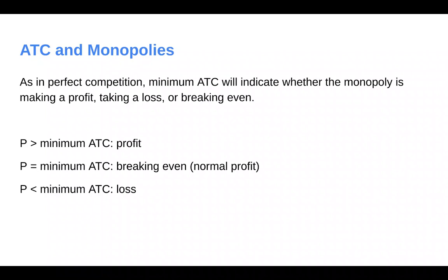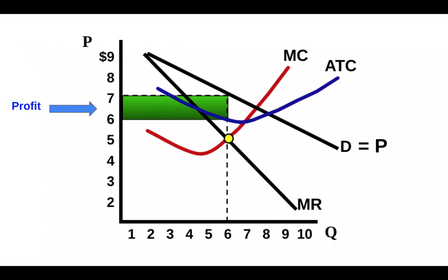If they're equal, breaking even, or a normal profit. And then if price is less than minimum ATC, the firm is taking a loss. So we can go ahead and add in average total cost here as an example. And because minimum ATC is below the price of $7, this firm is making a profit.